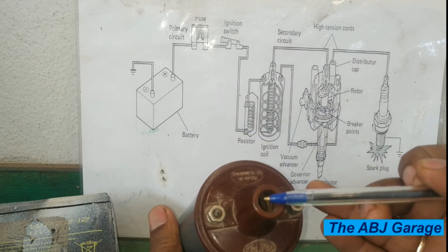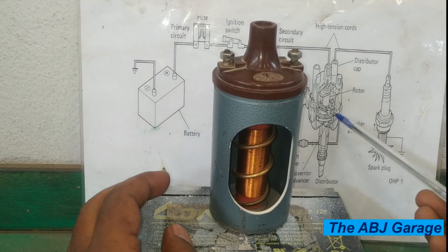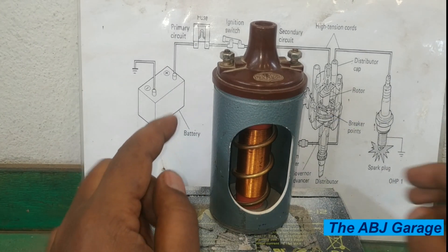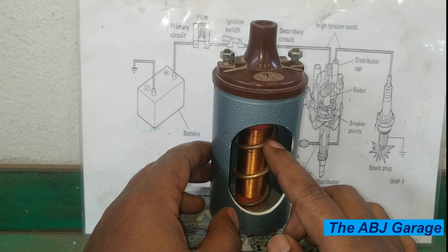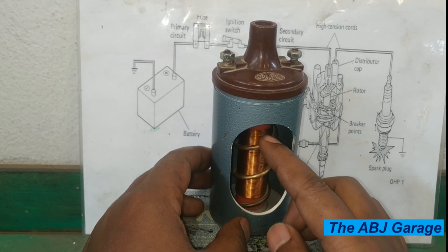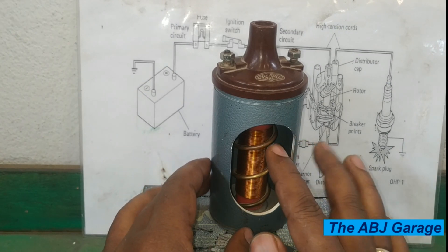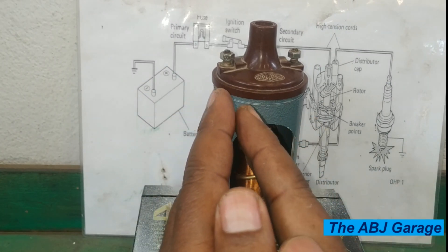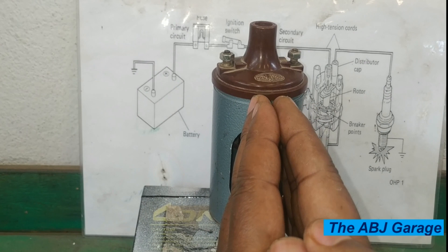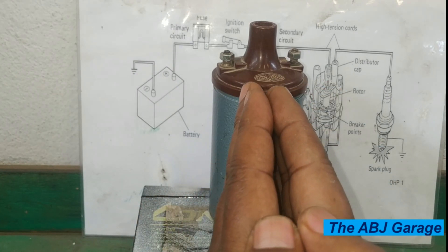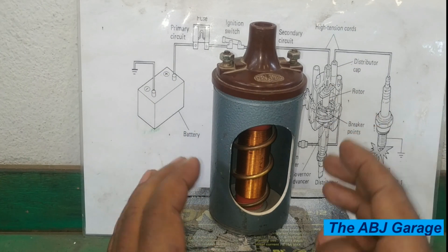When the ignition switch is turned on and the contact points are in a closed position, battery voltage is supplied to ignition coil positive. This forces electric current to flow through the primary winding — the thick wire. Current flows through the primary winding, completing the circuit through ignition coil negative and finally to battery ground at the distributor. When there is current flow through the primary winding, there is a buildup of magnetic field — the magnetic lines of force build outward.